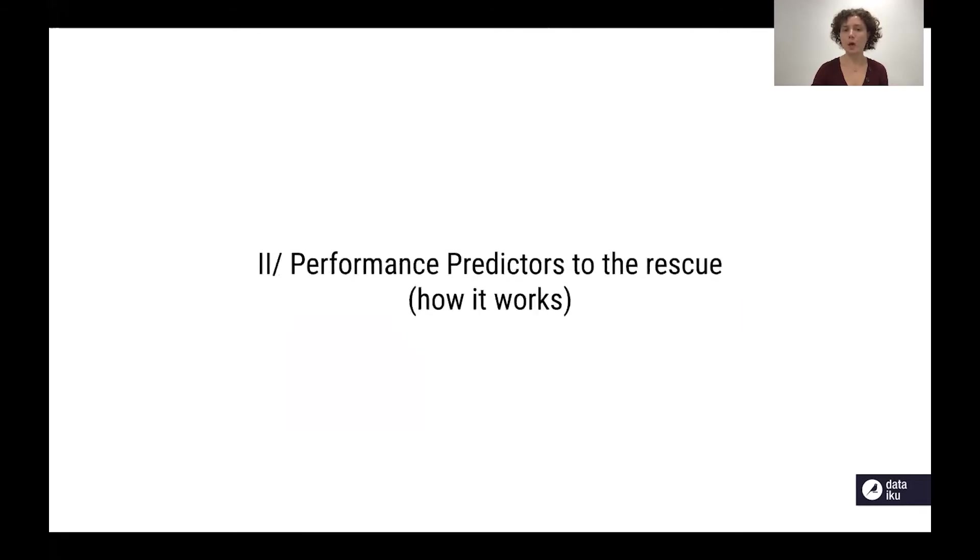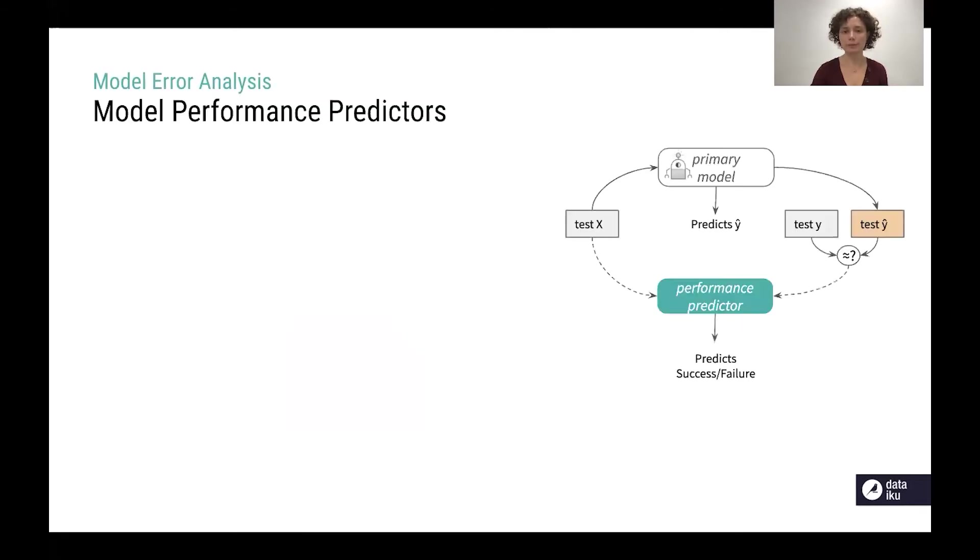So let's see how performance predictors work. First we have a primary model under investigation. For instance you can take a primary model that is predicting the price of houses. This primary model has an associated test set and we compute the prediction of the primary model on the test set and we categorize it as either a success or a failure.